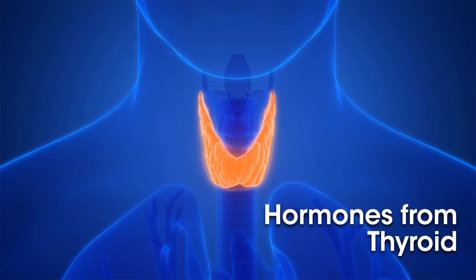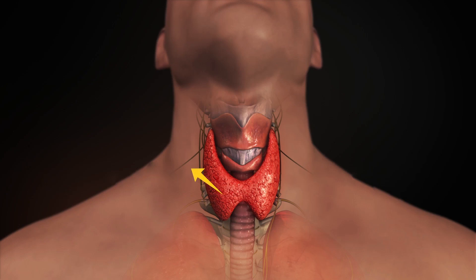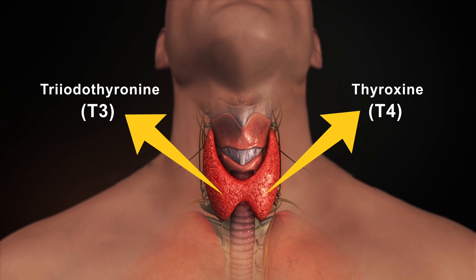Today we are not going to talk about exocrine glands. Among the endocrine glands, we start with thyroid. The thyroid gland secretes two hormones: T3, which is triiodothyronine, and T4, which is thyroxine.